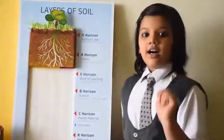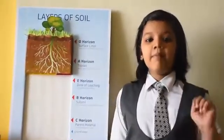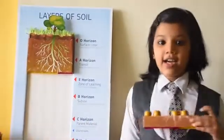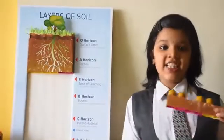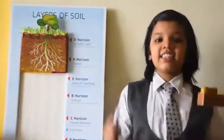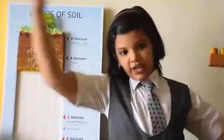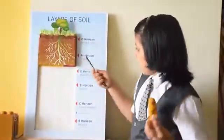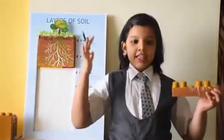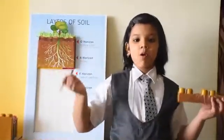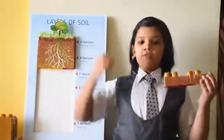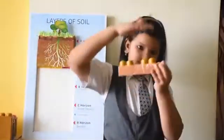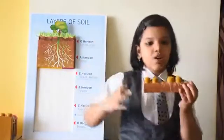The layer below the A horizon is the E horizon. This layer is composed of nutrients leached from the O and A horizons. This layer is more common in forested areas and has lower clay content.